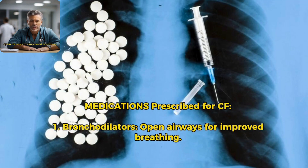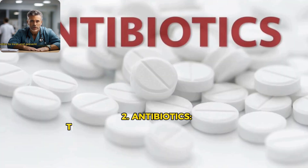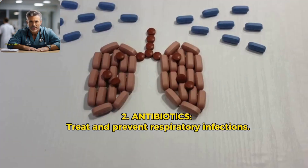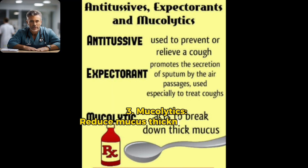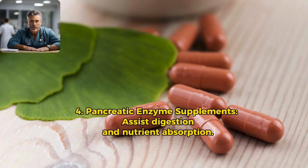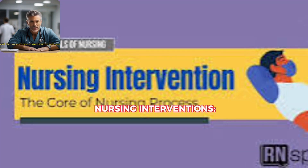Medications prescribed for CF: 1. Bronchodilators — open airways for improved breathing. 2. Antibiotics — treat and prevent respiratory infections. 3. Mucolytics — reduce mucus thickness, aiding in clearance. 4. Pancreatic enzyme supplements — assist digestion and nutrient absorption.